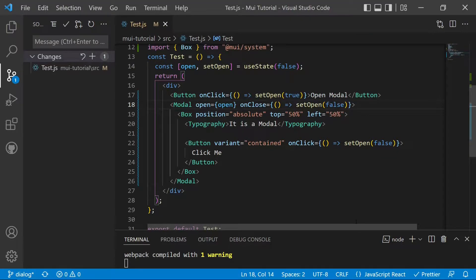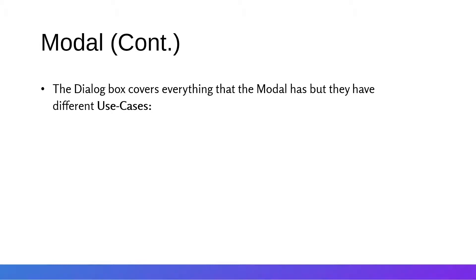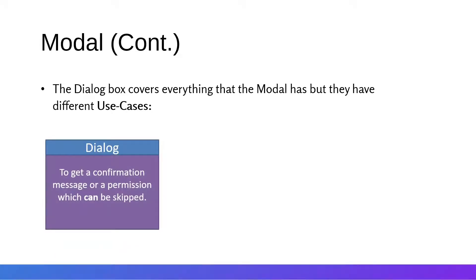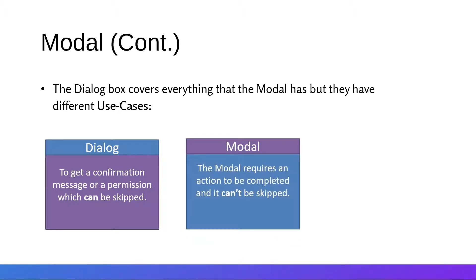The dialog box covers everything the modal has, but they have different use cases. A dialog box is used to get a confirmation or permission that can be skipped — for example, allowing microphone access on a web page, which you can reject or skip. A modal cannot be skipped and must always be answered. An example of a modal is a paywall on a content website where the content is hidden behind the modal until you pay, log in, or sign up — you cannot bypass it. This concludes the coverage of modals in Material UI.